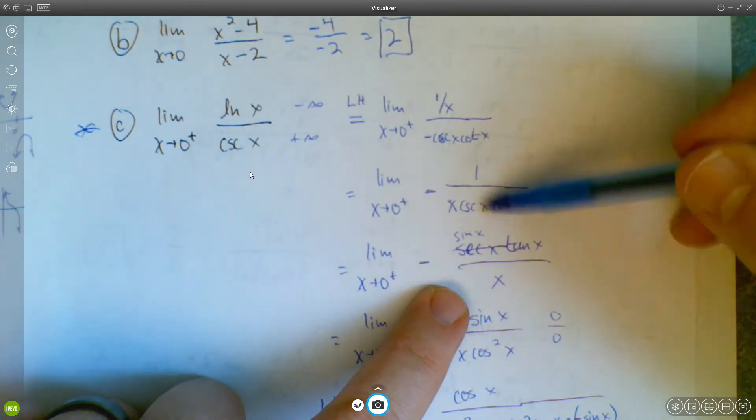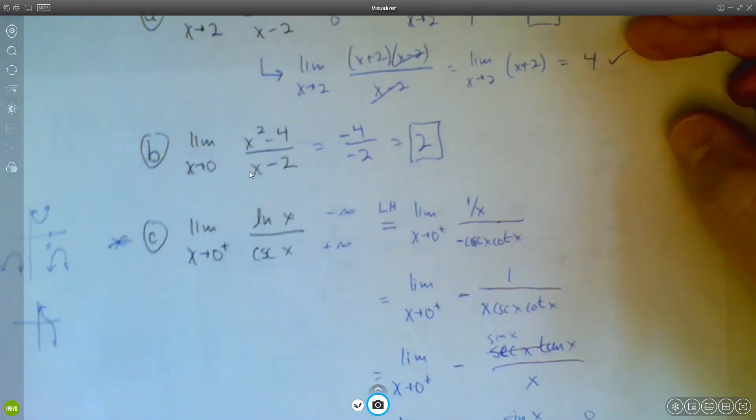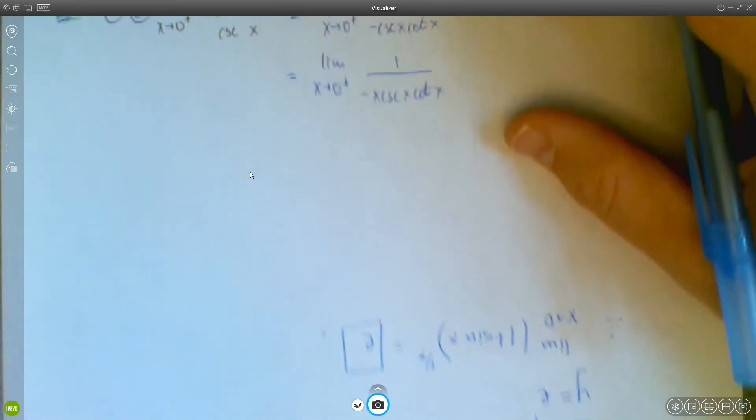The reciprocal of cosecant is sine, right? So I should have had, on the next step,